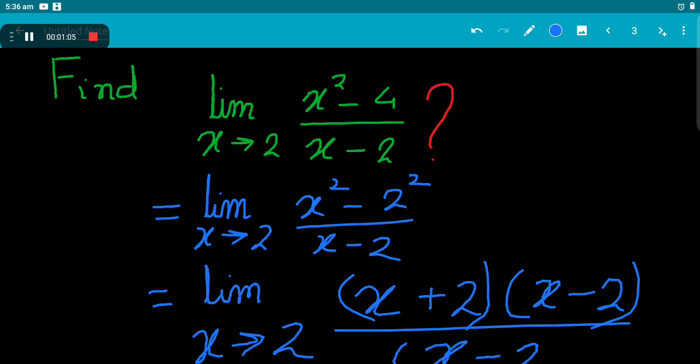Now, the denominator is as is. If we do not take x equal to 2, then we can always cancel x - 2.